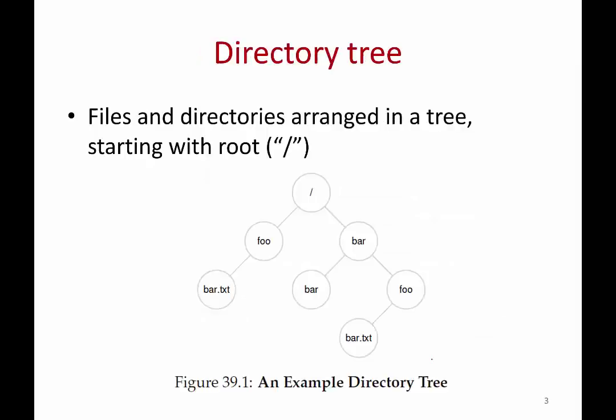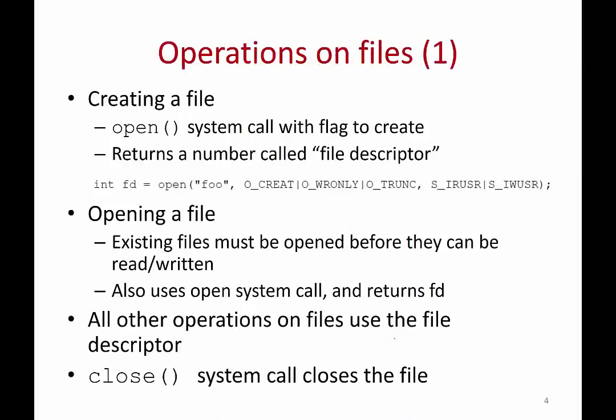Files and directories in a Unix-like system are arranged in a tree starting with the root. Any file has a certain path name. For example, /bar/foo/bar.txt will lead you to a particular file. In this path name you have the root directory, the bar directory, the foo directory, and finally the file at the leaf. These are all the parent directories along the path to the file.